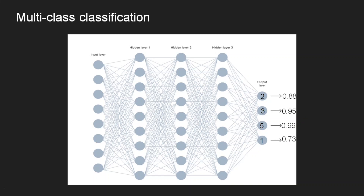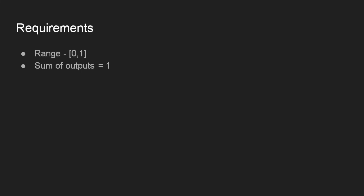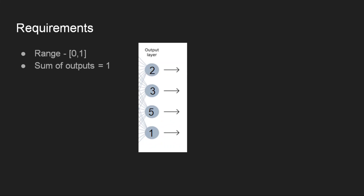Now let us see how to solve this using the Softmax function. We have two basic requirements: the range should be between 0 and 1, and the sum of all the outputs should be equal to 1. What if we simply normalize these outputs? We calculate the sum and then divide each value by the sum of all the values. If we do this, we get values where the sum equals 1 and all values are between 0 and 1 — both conditions are satisfied.